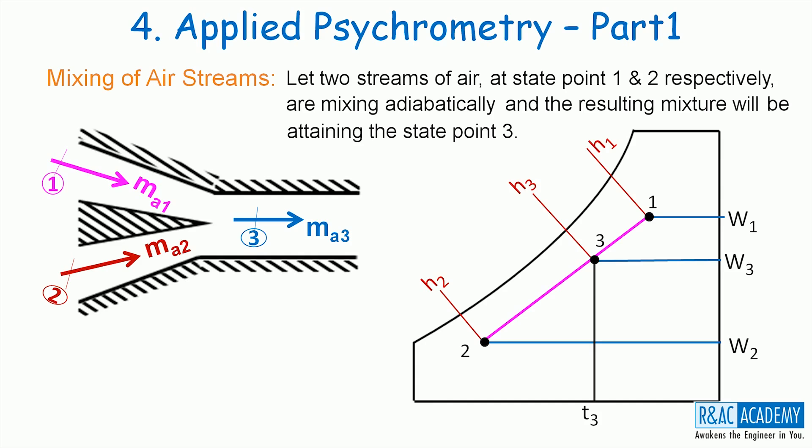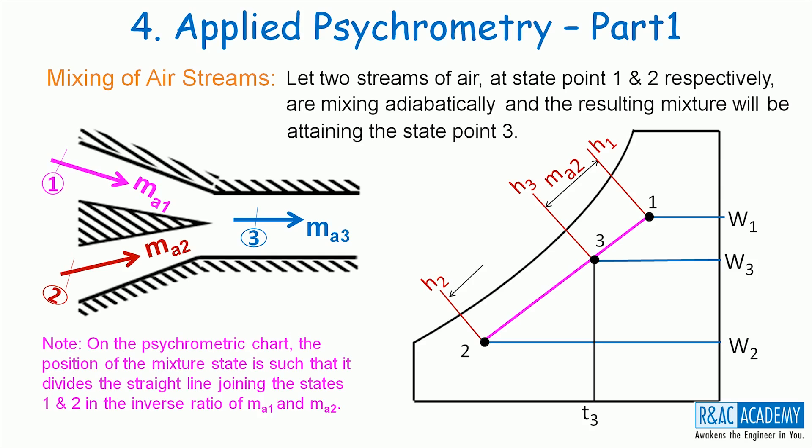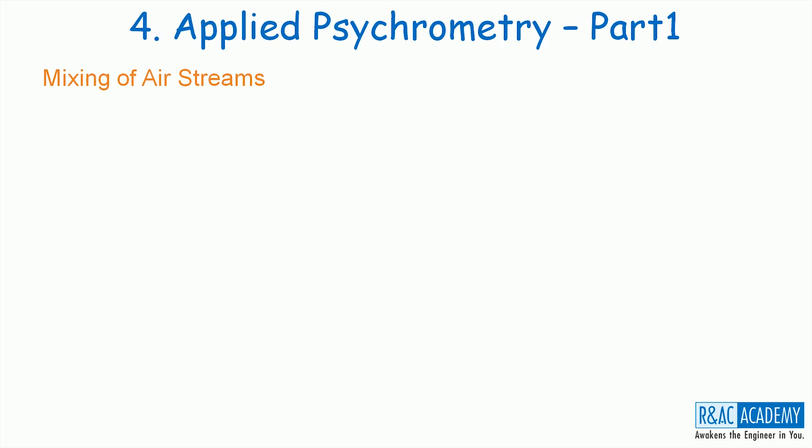W3, T3 and H3 are the properties corresponding to state point 3. An important note here: on the psychrometric chart, the position of the mixture state is such that it divides the straight line joining the states 1 and 2 in the inverse ratio of their masses. For mass balance of dry air, MA3 is equal to MA1 plus MA2. In other words, the sum of masses of dry air in streams 1 and 2 is equal to the mass of dry air in the mixture.